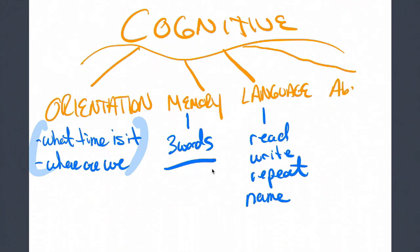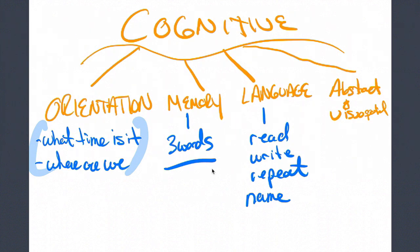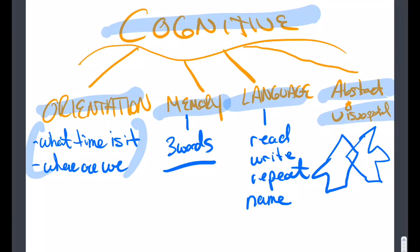Finally, we have the abstract and visual spatial category. Do they have the ability to understand something that is typically abstract? If there's a proverb or a certain quotation that may need you to be a little bit more abstract than normal to understand, can they understand that? Visual spatial can be assessed by having the patient repeat a symbol or a shape that you're drawing. If I drew this symbol, could the patient repeat that drawing? If you've ever heard of the mini mental state exam, or the MMSE, it's a short way to assess a patient's cognitive function. It's a standard set of questions that you can ask to figure out a lot of this information that you generally look for under cognitive.